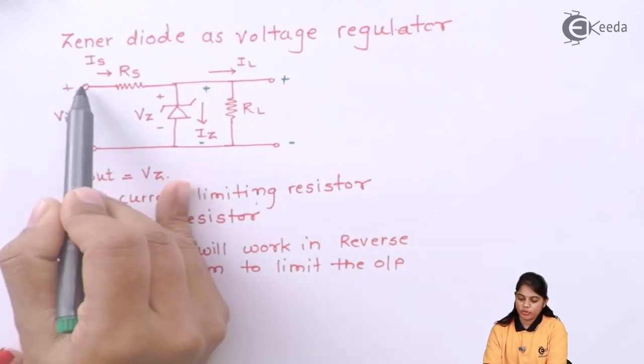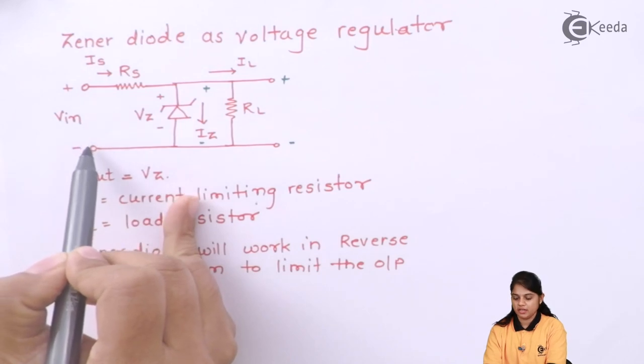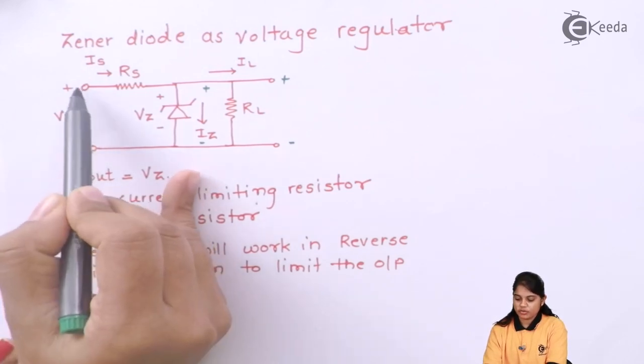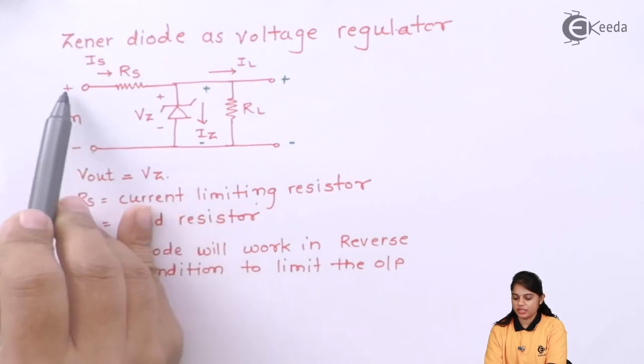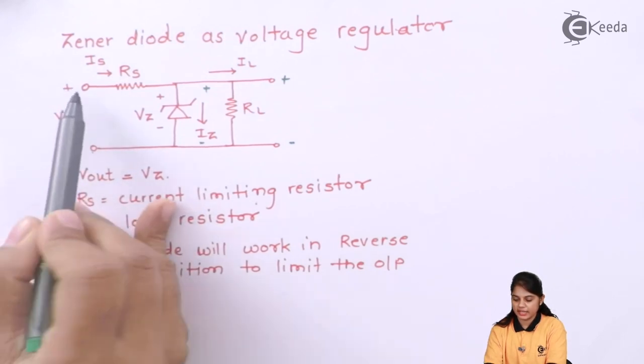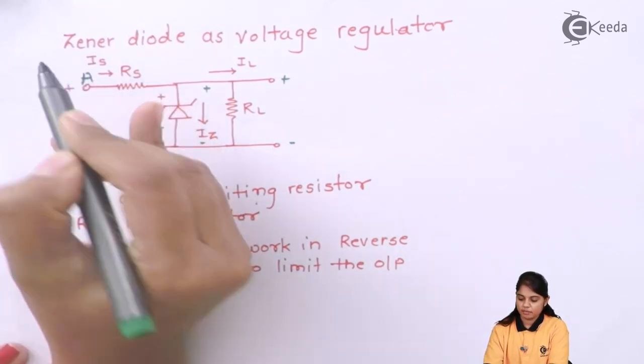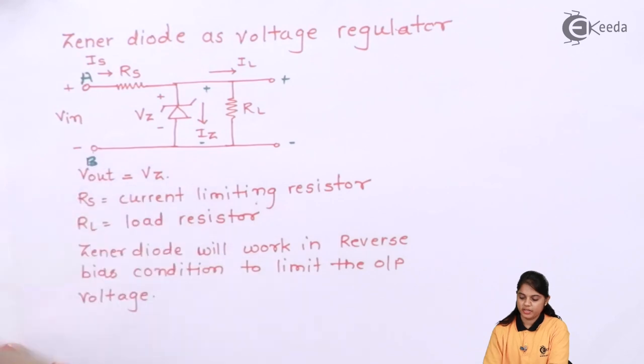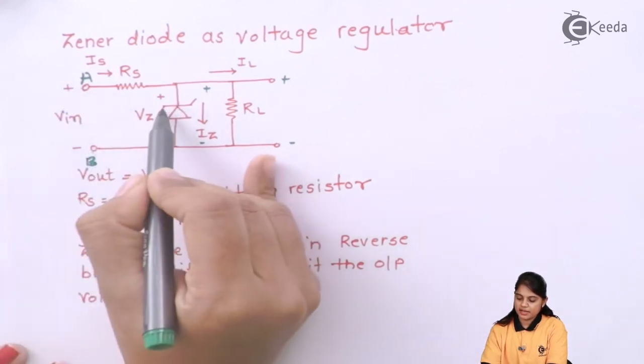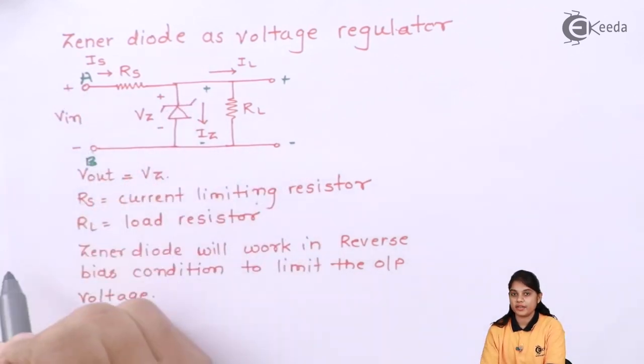Let's take an example. If you are providing an input here, you will start from 0V. When you start applying the voltage, that will be the forward voltage. Plus is connected to point A and minus is connected to point B. Due to this, my Zener diode will be reverse biased.